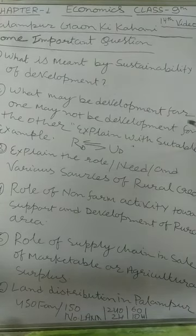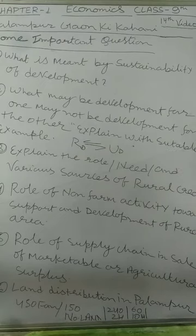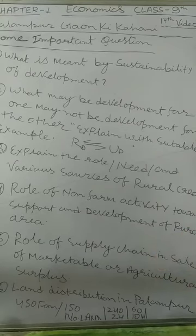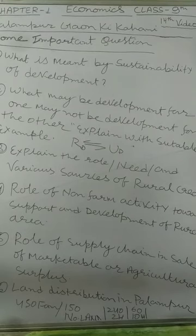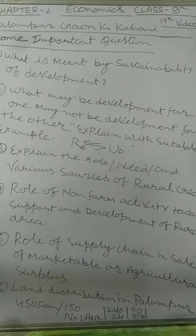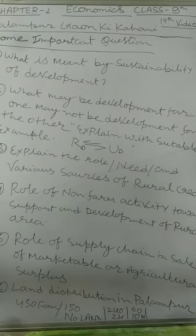The second question: what may be development for one may not be development for the other — explain with a suitable example. Ek ka vikas doosre ka vikas nahi ho sakta. Development for one may not be development for another person, because development refers to that which must ensure and enhance the quality of life of the people of that particular area.